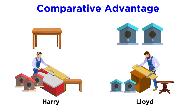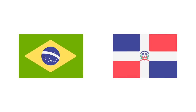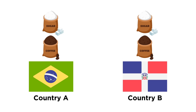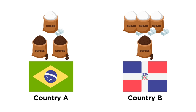Now, with this very simplistic example understood, let's apply absolute advantage and comparative advantage to entire countries. Suppose two countries, country A and country B, are able to produce both coffee and sugar. However, country A's climate and soil are such that it can more easily produce coffee, making two tons of coffee per hour, as opposed to only one ton of sugar per hour. Country B's climate and soil are such that it can more easily produce sugar, making three tons of sugar per hour, as opposed to just one ton of coffee per hour. Therefore, we can say that country A has an absolute advantage producing coffee, and country B has an absolute advantage producing sugar.